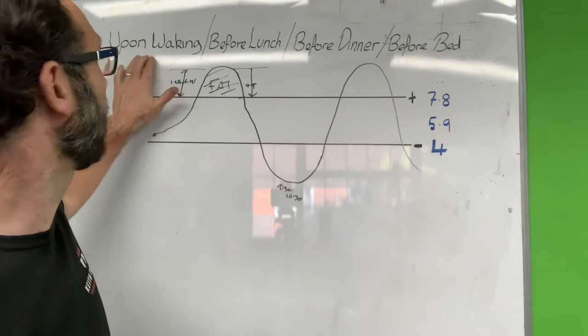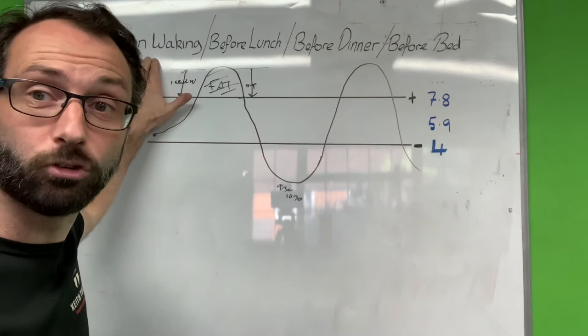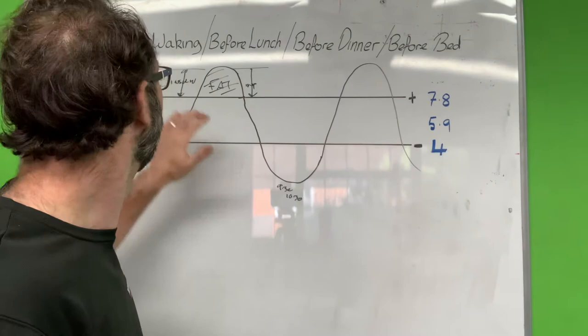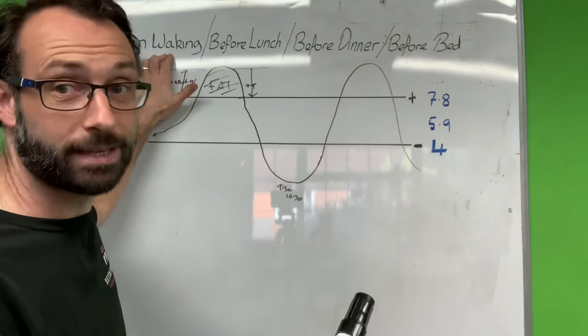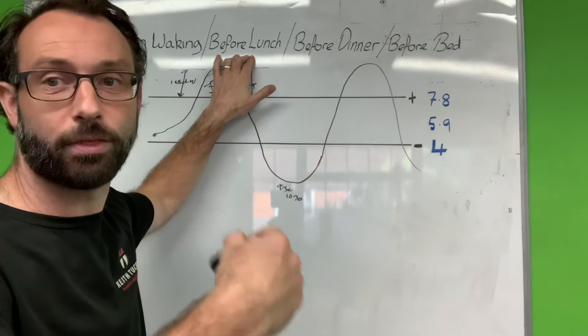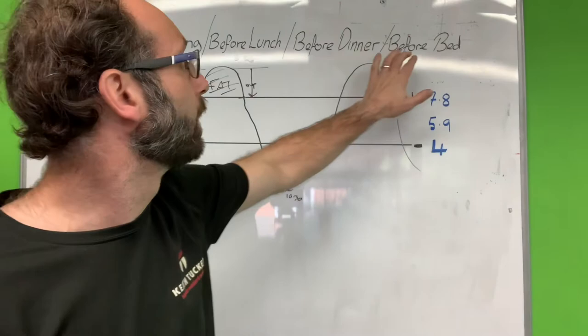Now you can do this really easily. So we get our clients to get a glucometer, they're 15, 20, 25 quid in Boots or Amazon, and we get them to take their blood sugar measurements. We get them to do it upon waking, let me move out of the way there, upon waking. So they wake up, they take their blood sugar. We get them to do it before lunch, not after, before lunch to see how things have panned out over time. Before dinner, so how did lunch affect them, and then before bed.